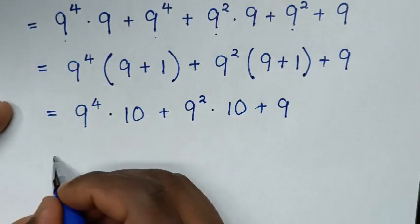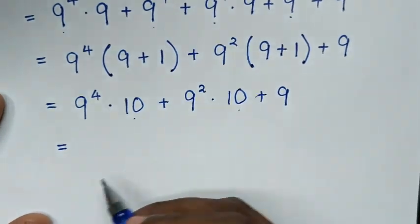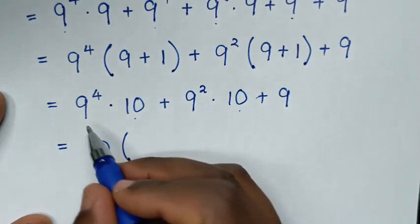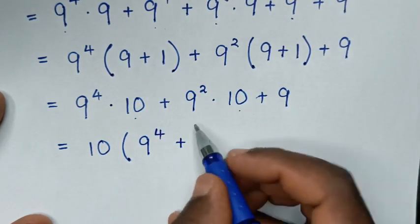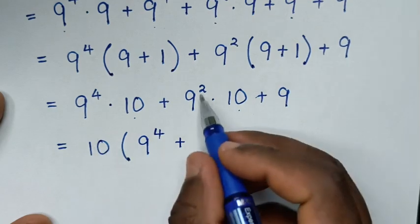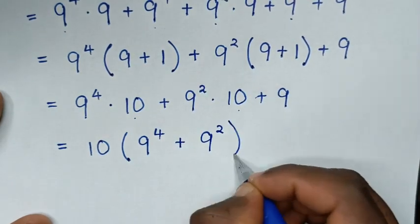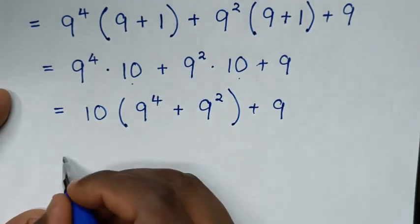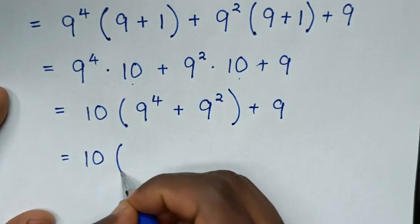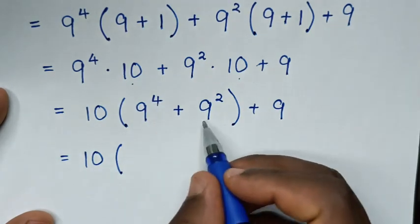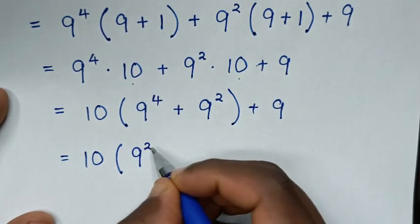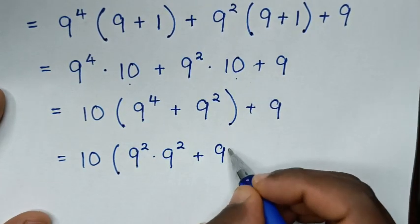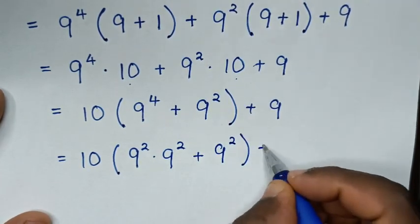Then in the next step it will be equal to: from here 10 is common, so we'll take 10 out of the bracket. This divided by 10 is 9 power 4, plus this here divided by 10 is 9 power 2, bracket. Then plus this 9. Then in the next step it will be equal to: 9 power 4 written as 9 power 2 times 9 power 2, then plus this 9 power 2, bracket. Plus 9.